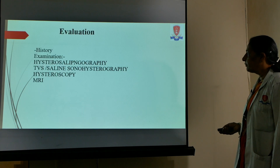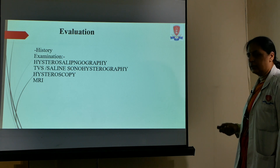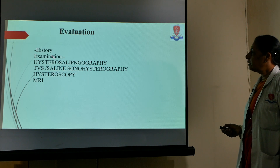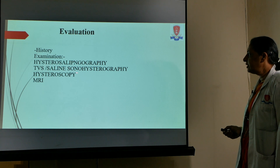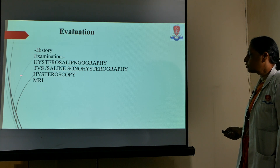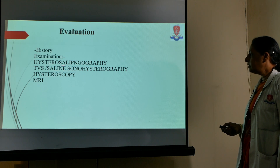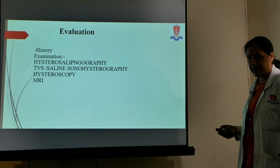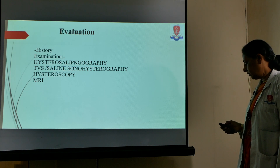Evaluation of uterine abnormalities begins with history, which is important in all types of infertility. For the uterine type, investigations include hysterosalpingography (HSG), transvaginal sonography (TVS), sonosalpingography, hysteroscopy, and MRI. Hysteroscopy is the gold standard, but HSG is the most convenient as it is an outpatient procedure not requiring anesthesia. MRI is used if available and required.